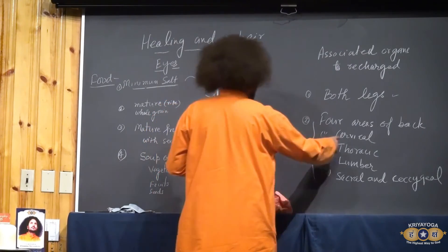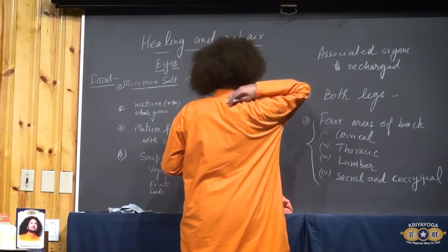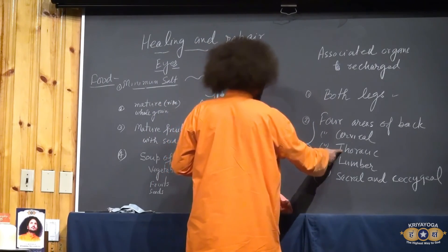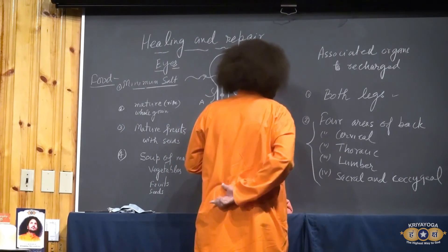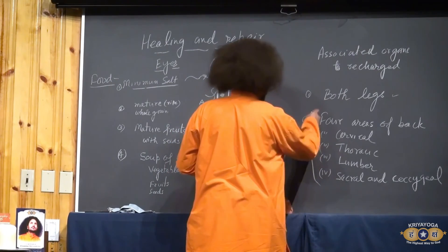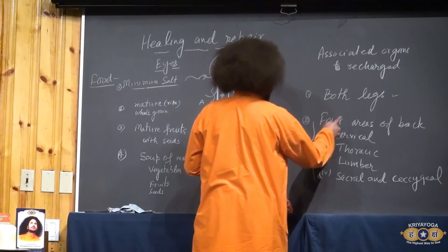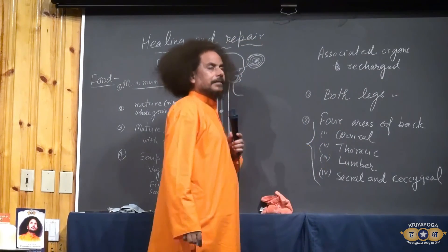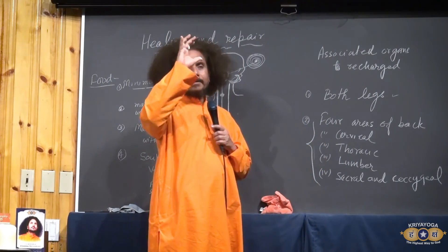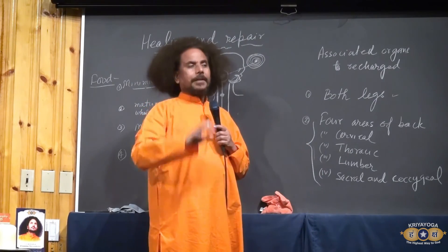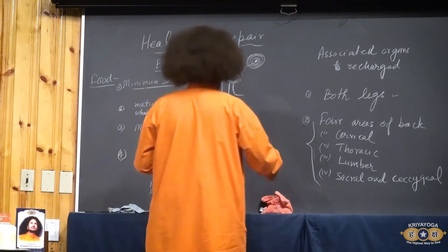And back portion is very important for all repair system. Back portion means, this is the cervical area. This, behind chest, thoracic area. Behind abdomen, lumbar area. And the lower part, sacral and coccygeal. Try to turn, relax right and left alternately. Having the upward vision. Tongue rolled back. And watching the breath.